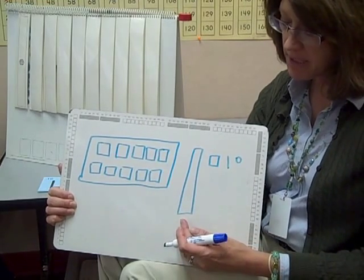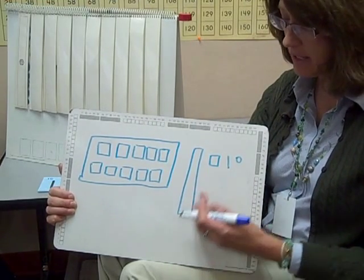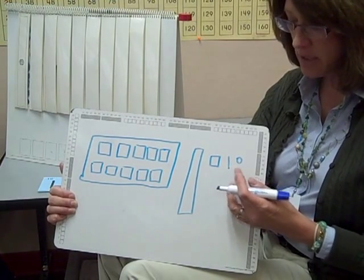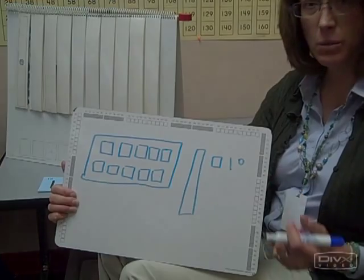So older students would be representing thousands with their rectangle, hundreds with their box or square, tens with their stick, and ones with their one.